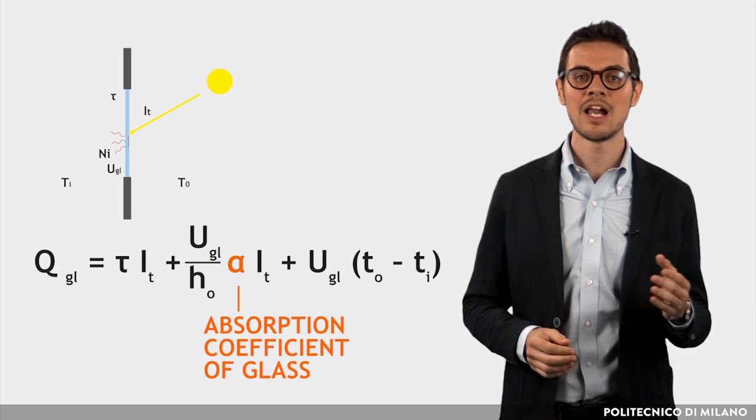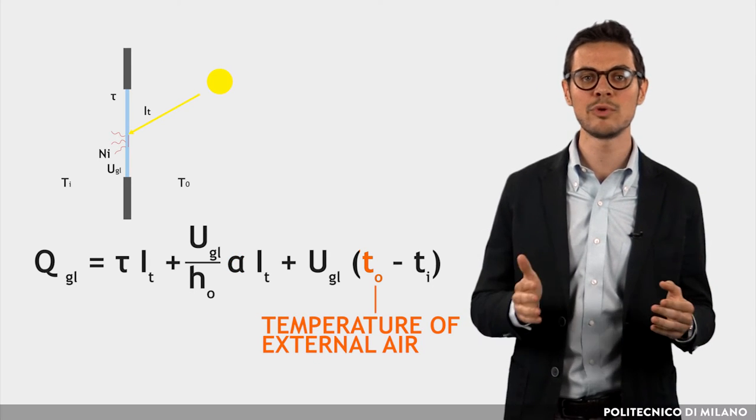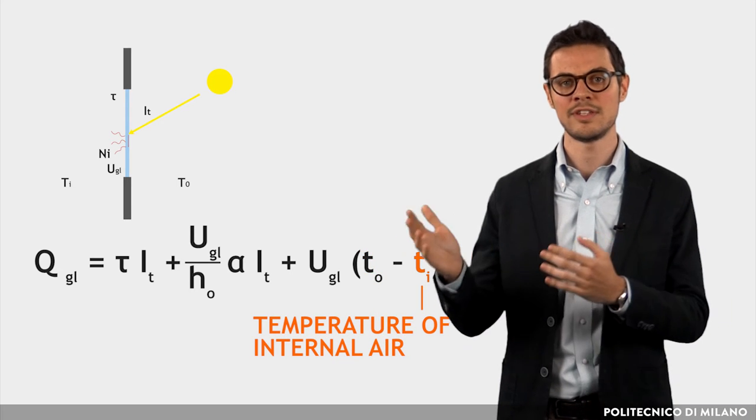Finally, α is the absorption coefficient of glass. T_O is the temperature of external air. T_I is the temperature of internal air.